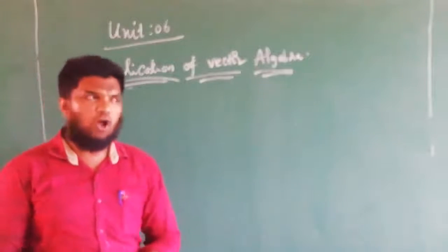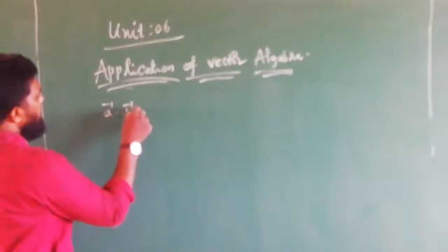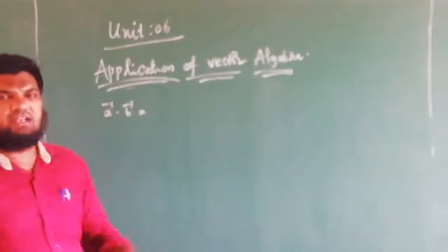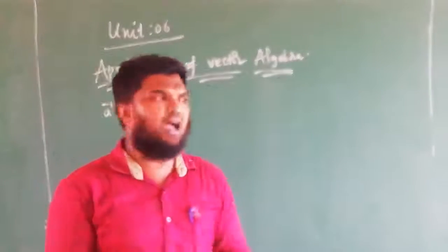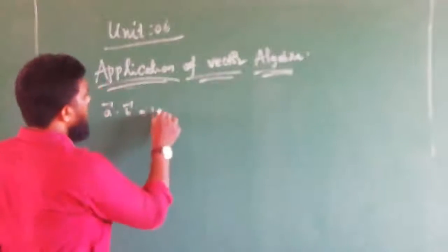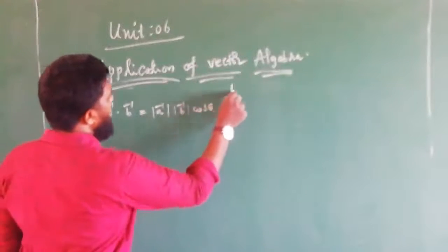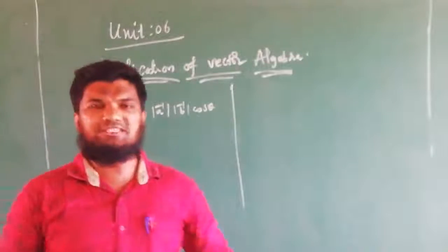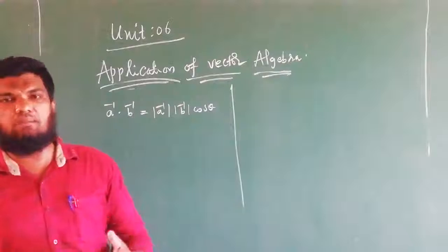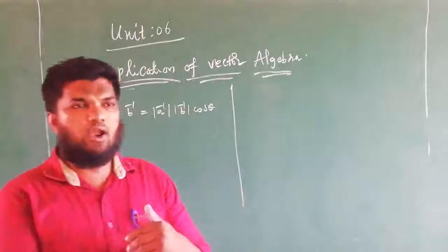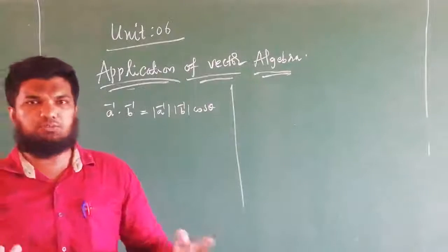We will study the dot product in this particular line. We can write A vector dot B vector. We have two vectors in this particular form. The dot product is the model of A and the model of B multiplied by cos theta. In the dot product, we also study the double and triple product — we study the box product.